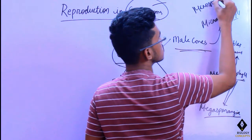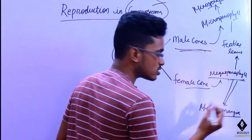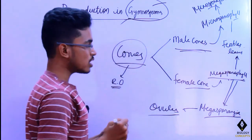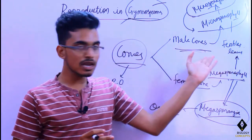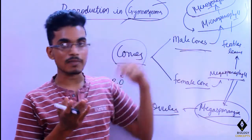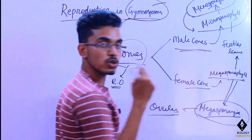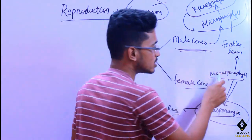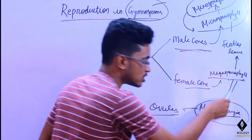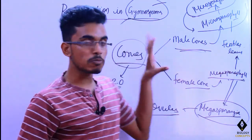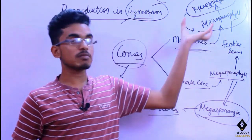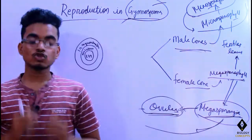The female fertile leaf contains megasporangia, and the male fertile leaf contains microsporangia. In other words, megasporangia are known as ovules. Microsporophylls are the leaves of the male cones, and on the lower side of the microsporophylls there is the presence of microsporangia. Similarly, female cones have fertile leaves called megasporophylls, and on the upper end of a megasporophyll there is a presence of megasporangia.